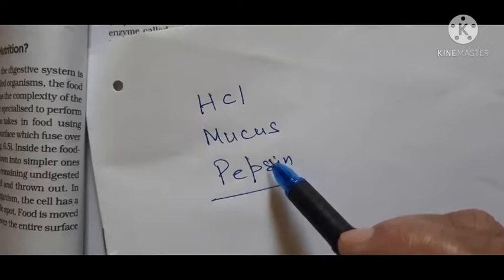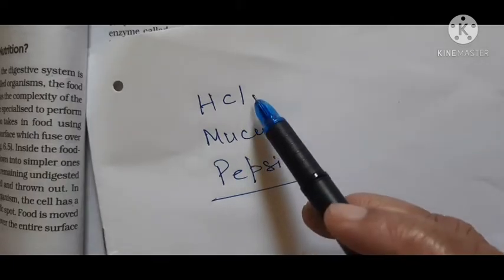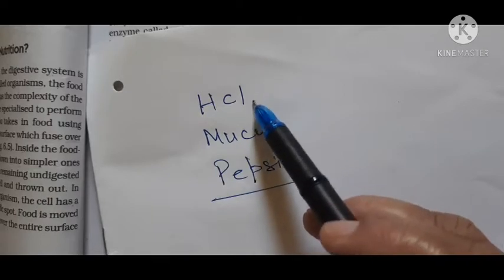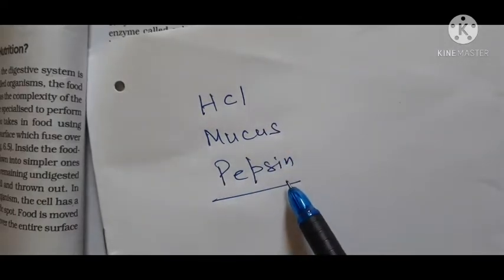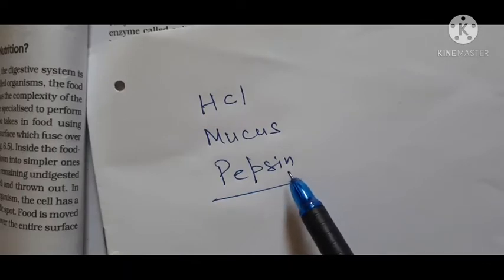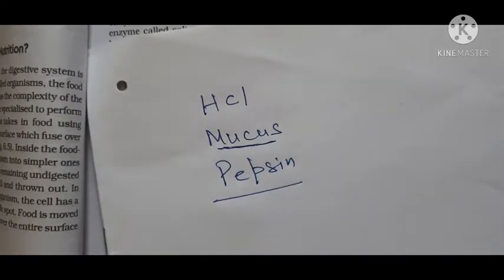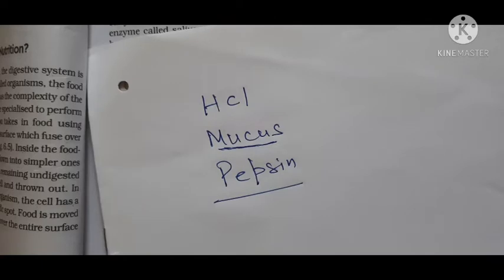The function of HCl is to kill bacteria present in the food and to make the food acidic so that pepsin can be activated. Pepsin digests proteins. Mucus is secreted to form a protective layer on the walls of the stomach, protecting them from the corrosive action of hydrochloric acid. If mucus is not secreted, HCl will cause erosion of the inner lining of the stomach, leading to the formation of ulcers.